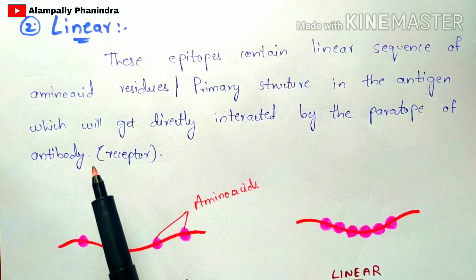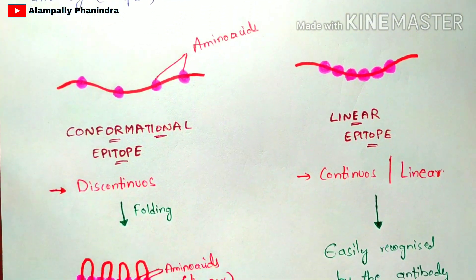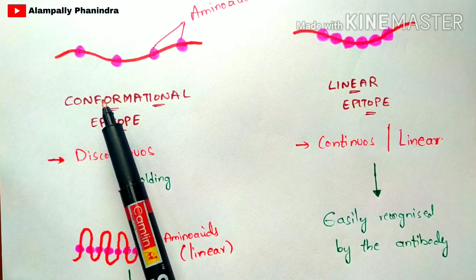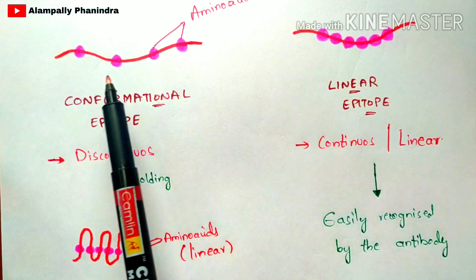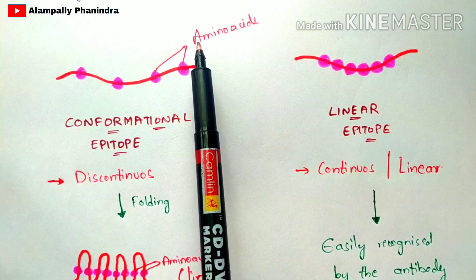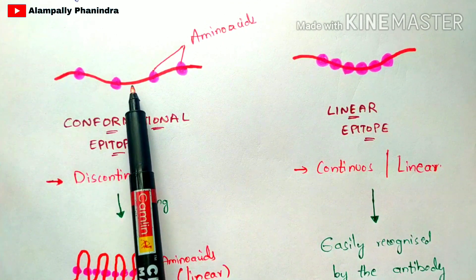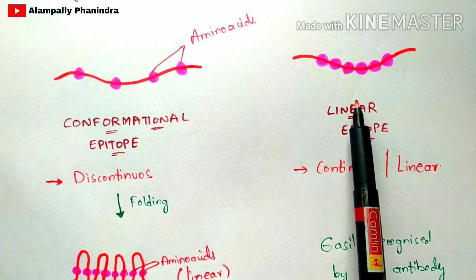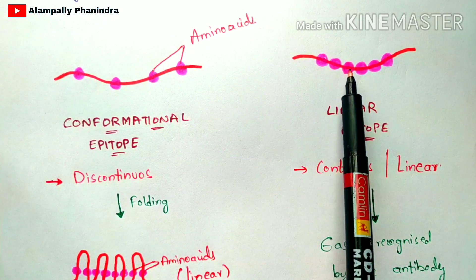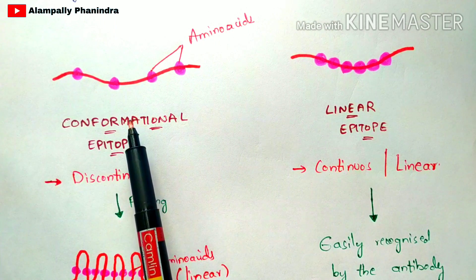Let us now discuss conformational and linear epitopes in detail with their structures. In the conformational epitope, the amino acid sequence is discontinuous — there is a gap between each amino acid. In the linear epitope, the amino acid sequence is continuous — there is no gap between each amino acid. These dot-like structures in the diagram represent the amino acids.